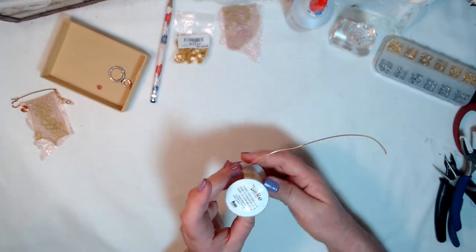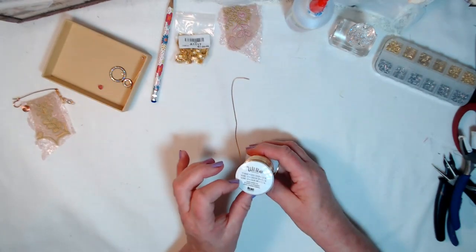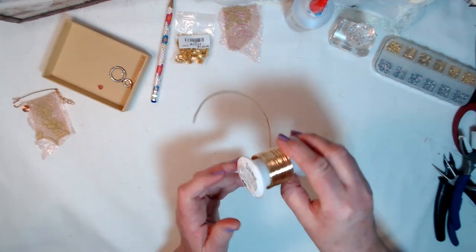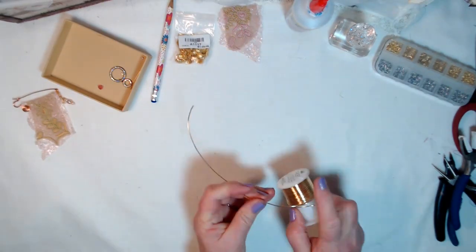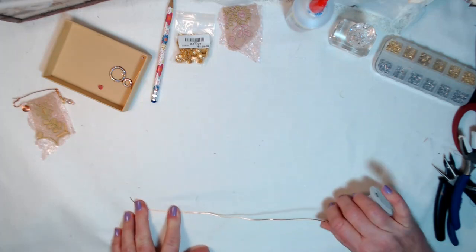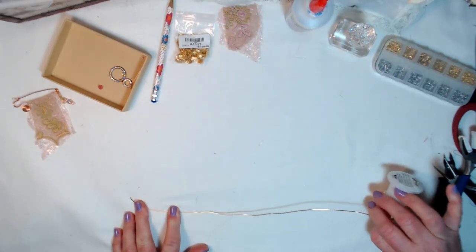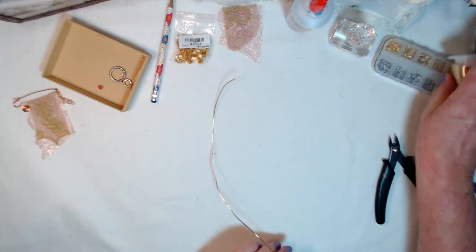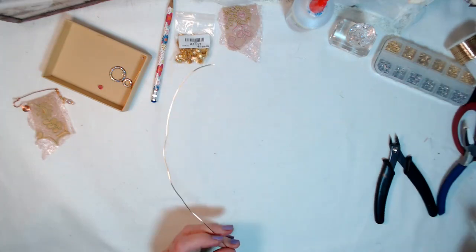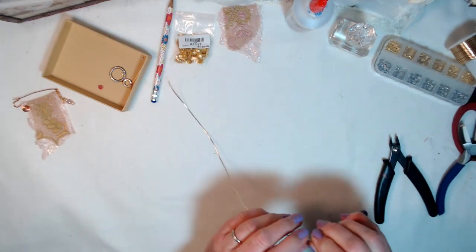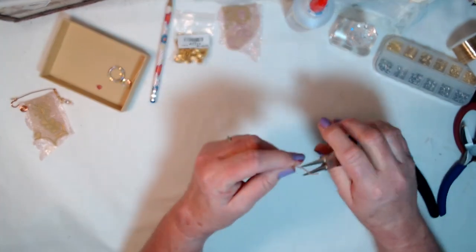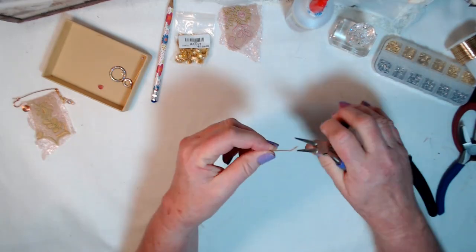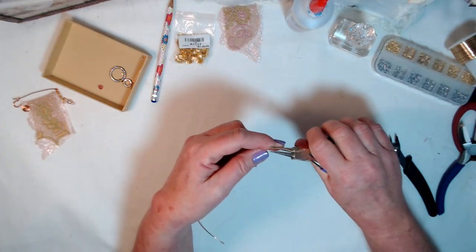We're going to start with 18 gauge wire. This is what I use. I get it at Hobby Lobby with a coupon, and we're going to cut about 12 inches, give or take. I've already got a tutorial showing you how to do the wire pens, the journal pens. So if you haven't seen that, you can go back and watch that if you want to, because I'm not going to go real slow on this one so I can keep the video from being too long.